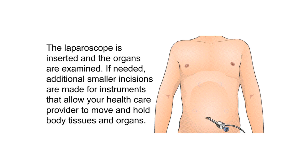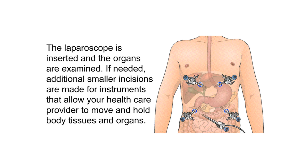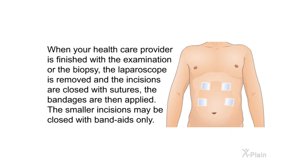The laparoscope is inserted and the organs are examined. If needed, additional smaller incisions are made for instruments that allow your health care provider to move and hold body tissues and organs. When finished with the examination or biopsy, the laparoscope is removed and the incisions are closed with sutures. Bandages are then applied; the smaller incisions may be closed with band-aids only.